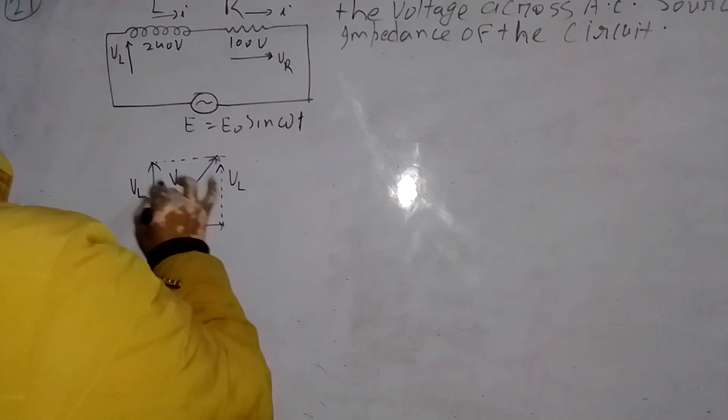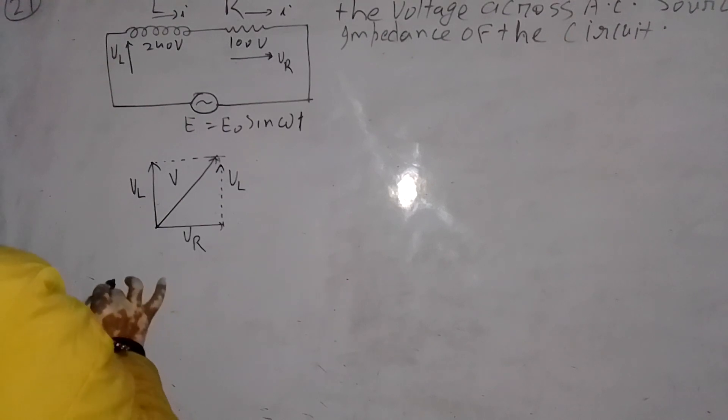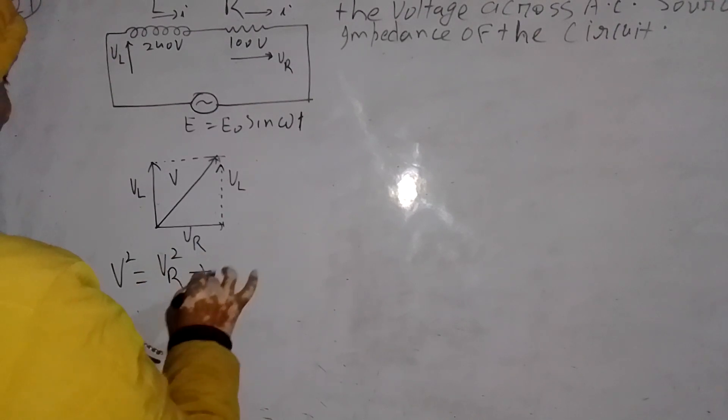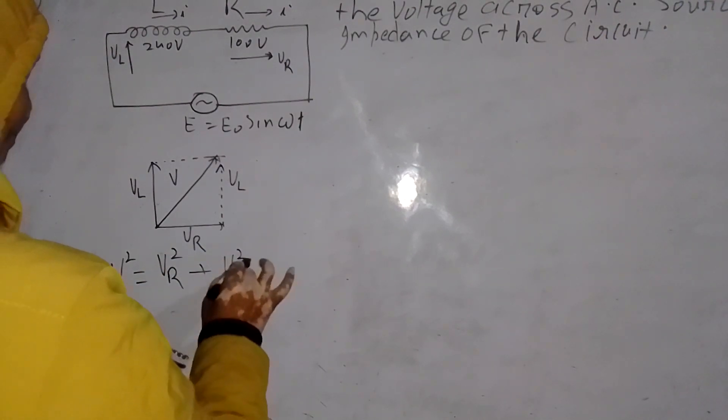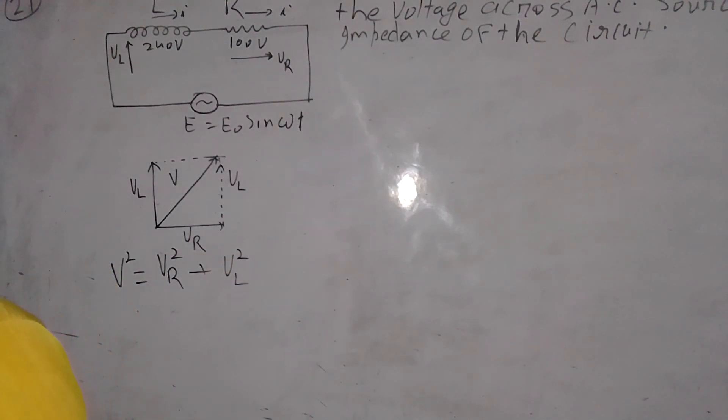Three vectors: V squared is equal to VR squared plus VL squared plus two times VR into VL into cos 90. That is zero. So perpendicular vectors, the resultant is V squared equals VR squared plus VL squared.